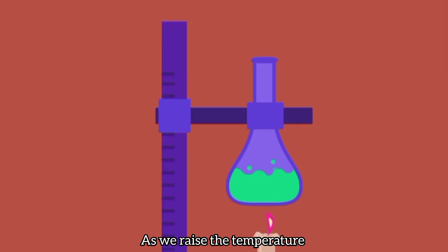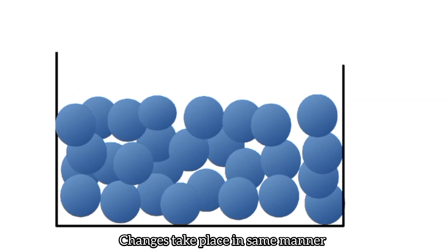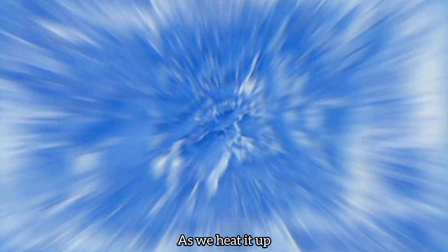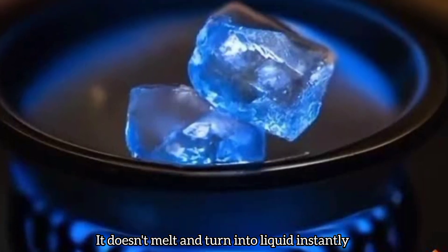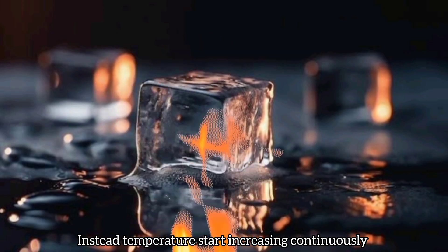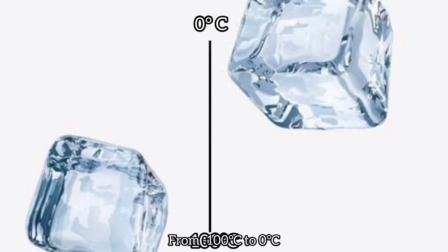As we raise the temperature, changes take place in the same manner. Now imagine we have an ice cube at minus 100 degrees Celsius. As we heat it up, it doesn't melt and turn into liquid instantly. Instead, the temperature of the ice cube starts increasing continuously from minus 100 degrees Celsius to 0 degrees Celsius.